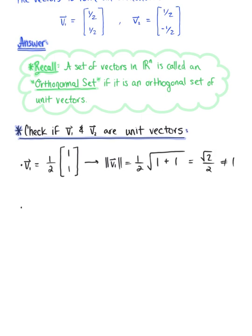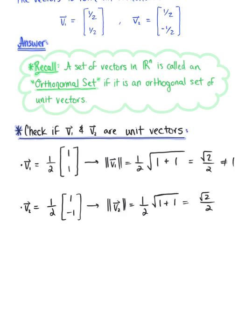Let's see what's going on with vector v₂. Again, I'm going to pull out that common scalar 1/2, so I have 1/2 multiplied by the vector with components 1, negative 1. And finding the length, we have 1/2 multiplied by the square root of 1 plus 1. So we can again see that √2/2 certainly does not equal 1.